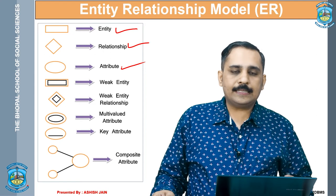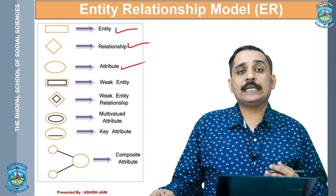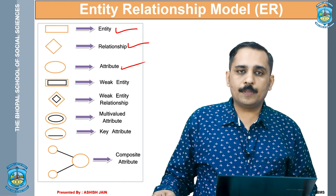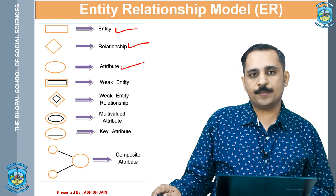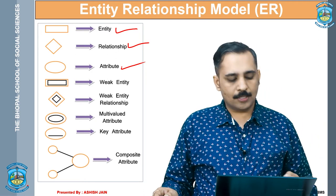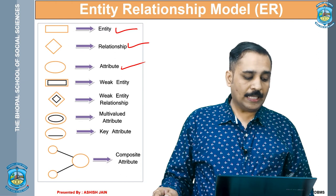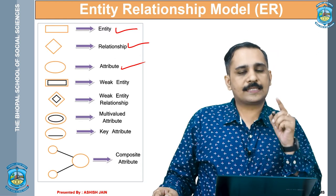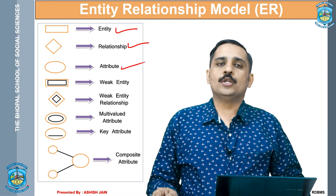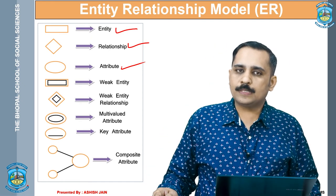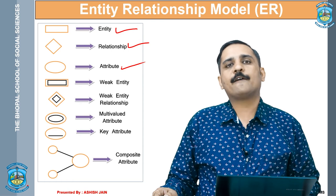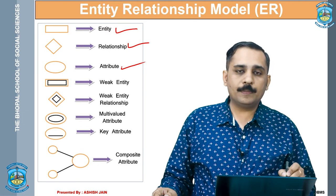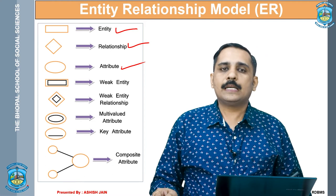A weak entity is represented using double rectangles. The relationship among two weak entities is called a weak entity relationship, represented with double diamond signs. Then we have multi-valued attributes. In DBMS we want a single value in a single column, but if a person has two or three phone numbers, one phone number field can have multiple values. To represent this graphically, we use a multi-valued attribute symbol which is double ellipses. This indicates the field is a multi-valued field.